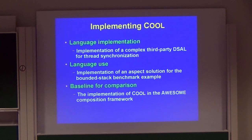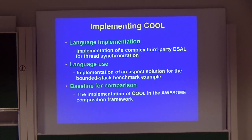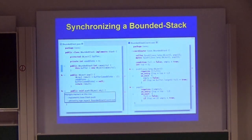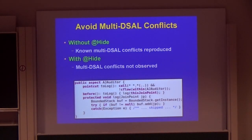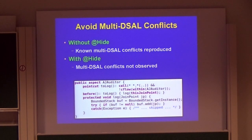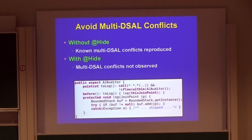We also implemented COOL, a DSAL for thread synchronization, and used it to synchronize the bounded stack. We then compared our implementation with the implementation in the Caesar composition framework. When we added an AspectJ aspect using the bounded stack, we saw that without our metadata and hide annotations, multi-DSAL conflicts were reproduced. When we added the metadata, they were prevented. We concluded that the metadata was able to prevent multi-DSAL conflicts.